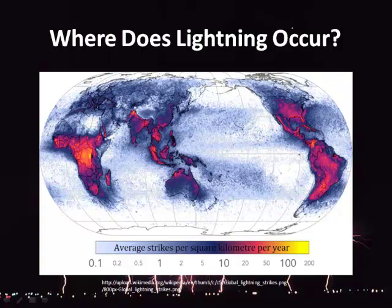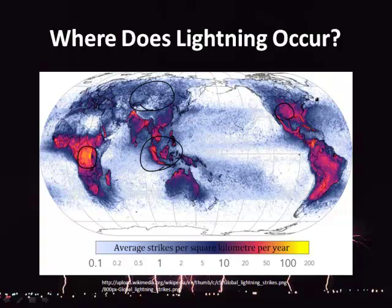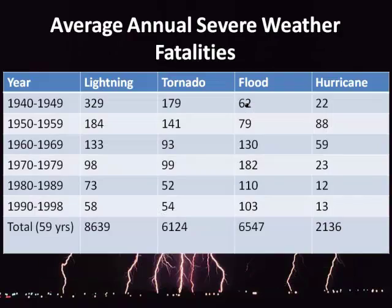Where does lightning occur? Looking at a global map, you can see common regions of lightning activity. America has quite a few strikes, and Africa surprisingly has a large number as well. Indonesia also sees a lot of lightning. If you live in Russia, you're probably pretty safe. The activity you'll be doing for this class will discuss the frequency of lightning in more detail.